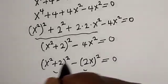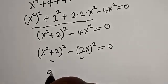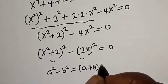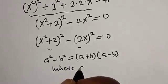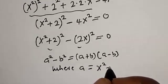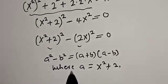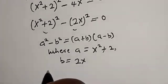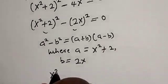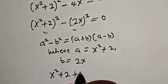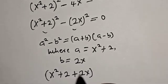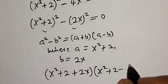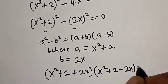Now if you look at this, this is a difference of two squares. Remember this rule: a squared minus b squared is equal to a plus b multiplied by a minus b, where a is equal to x squared plus 2 and b is equal to 2x. Now substituting, we have x squared plus 2 plus 2x multiplied by x squared plus 2 minus 2x equals 0.